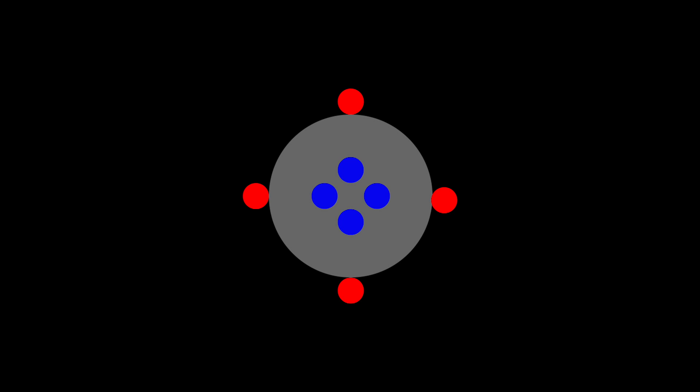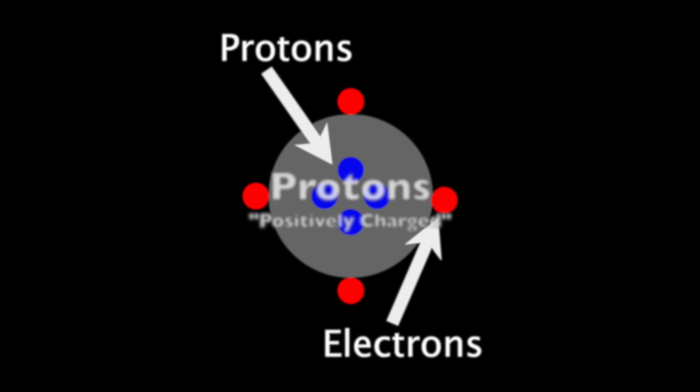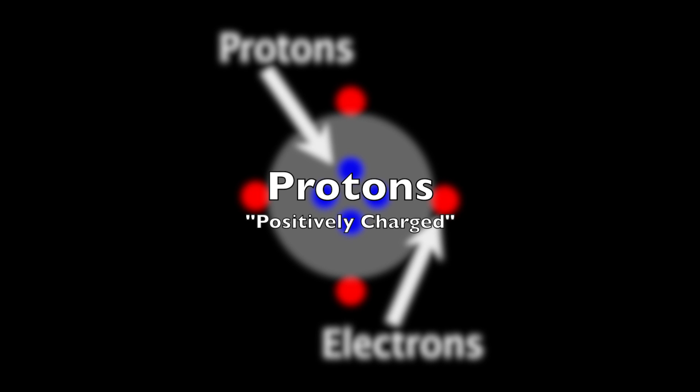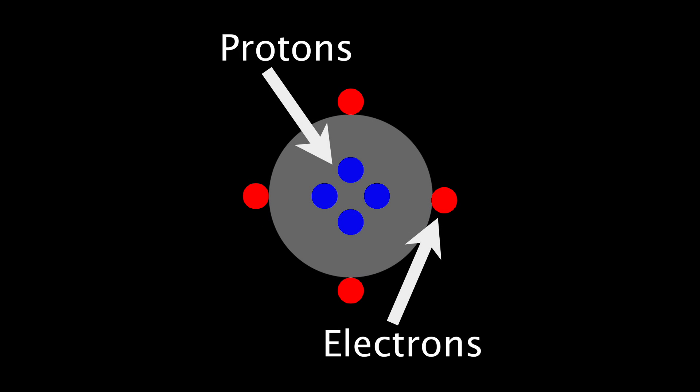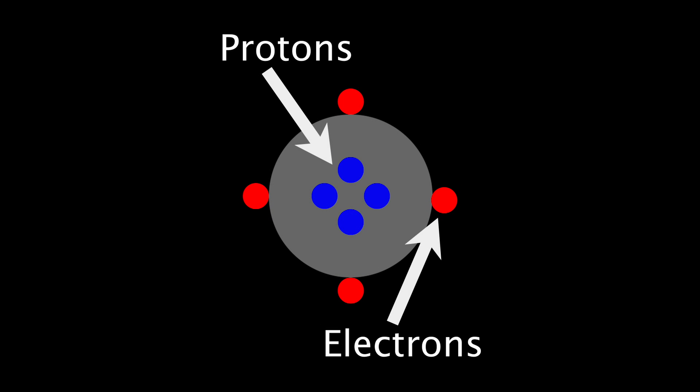An atom looks something like this, and they are made of stuff called protons and electrons. Protons make up the nucleus in the center, and electrons are outside of that. We like to say that protons are positively charged, and electrons are negatively charged. When there's an equal number of both, the whole atom itself is neutral.